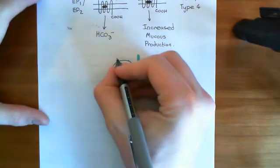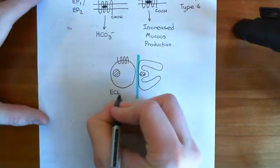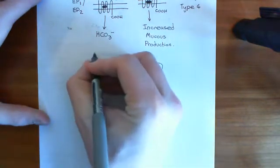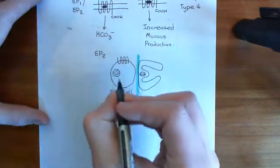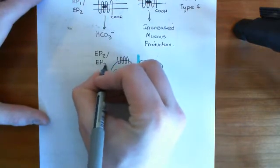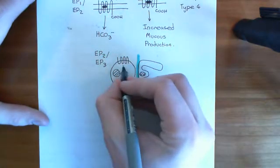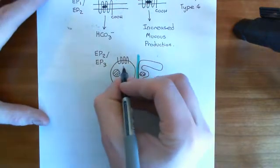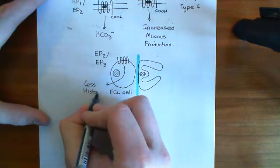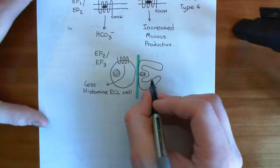You also have receptors for prostaglandin E2 on the surface of the enterochromaffin-like (ECL) cell — prostaglandin E2 receptors of type 2 (EP2) and type 3 (EP3). Both of them trigger a decrease in the production of histamine, so less histamine will be released. If the enterochromaffin-like cells release less histamine, then the parietal cells receive less histamine and therefore secrete less hydrochloric acid.